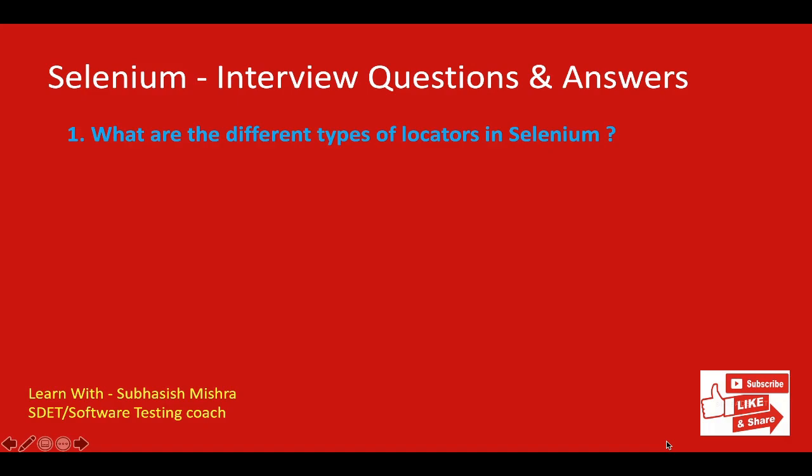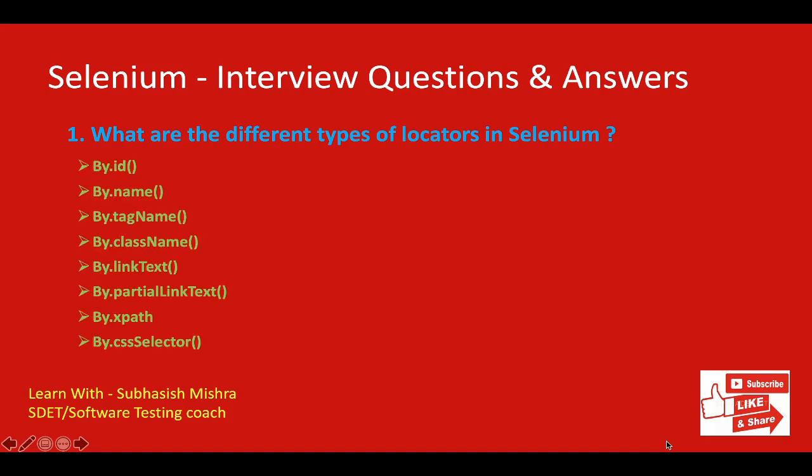What are the different types of locators in Selenium? First, you need to tell what a locator is. Locators are the way to identify an HTML element on a web page. Locators help Selenium scripts in uniquely identifying web elements such as textbox, button, etc. present in a web page. For example, if you need to click on a button, you first need to locate where that button is, then take an action like click.